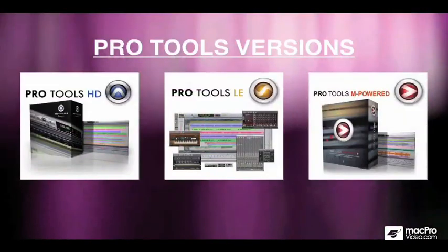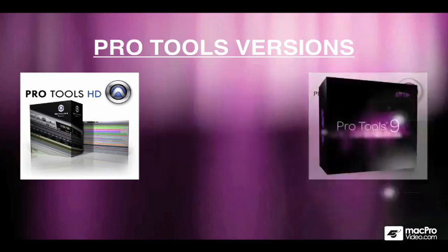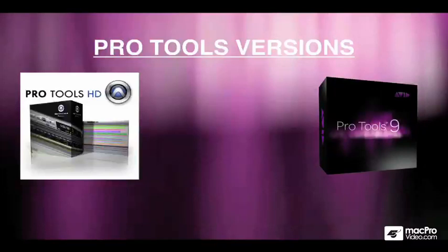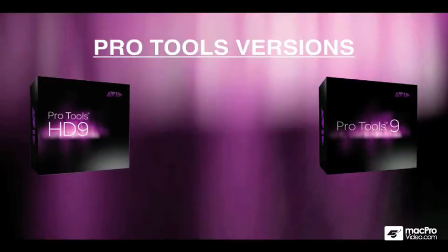Previously to Pro Tools 9, there were three versions of the Pro Tools software: HD, LE, and M-powered. Now all three versions have been combined and brought up to the same software capabilities. M-powered and LE are now called Pro Tools 9, and the HD version has been relabeled HD9.